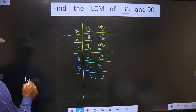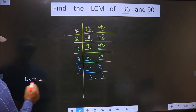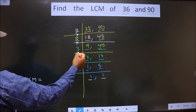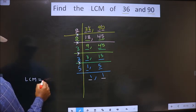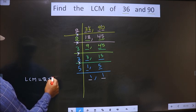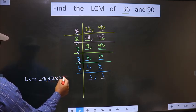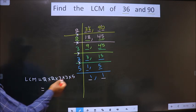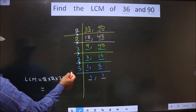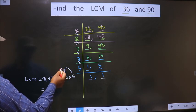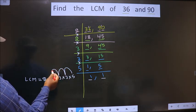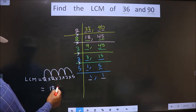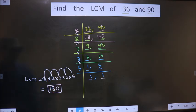So now our LCM is the product of these numbers. That is 2 into 2 into 3 into 3 into 5. So let us multiply all these numbers. 5 threes is 15. 15 threes is 45. 45 into 2 is 90. 90 into 2 is 180 is our answer.